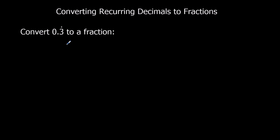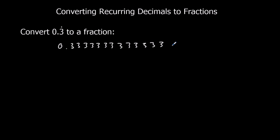Here we've got a recurring decimal. So this 0.3 with a dot over it, what that means is it's 0.333333 and the 3s go on forever, they're never going to end. Any recurring decimal can be converted into a fraction — so anything with dots on it can be converted to fractions.